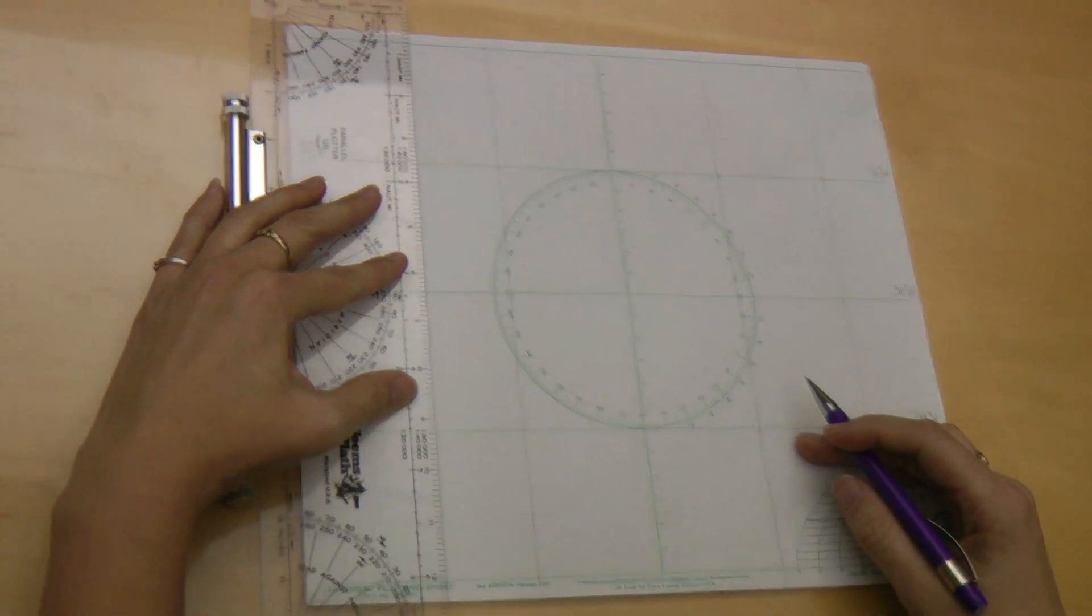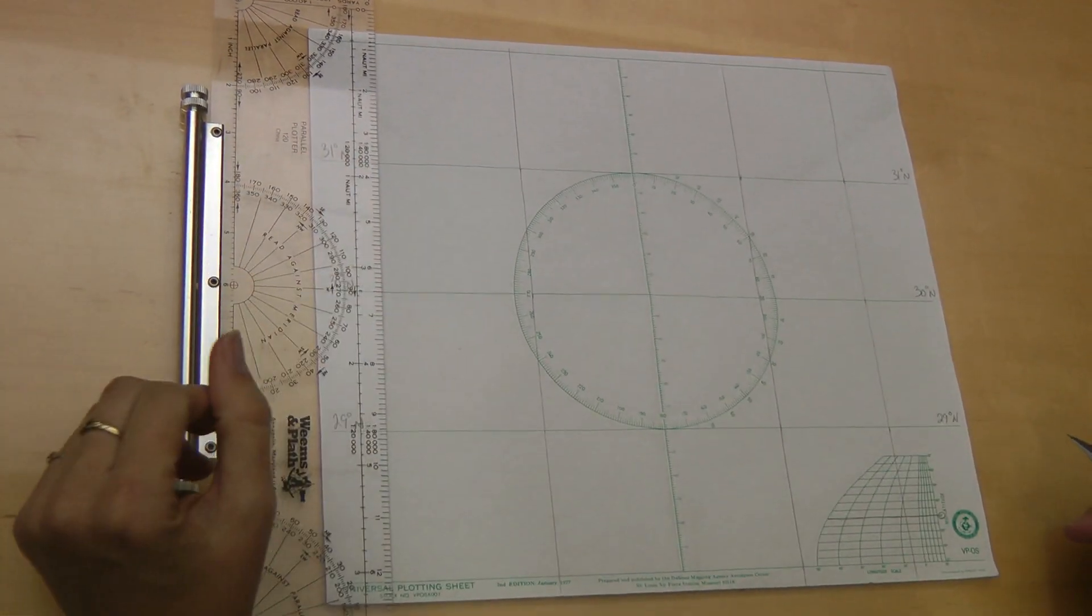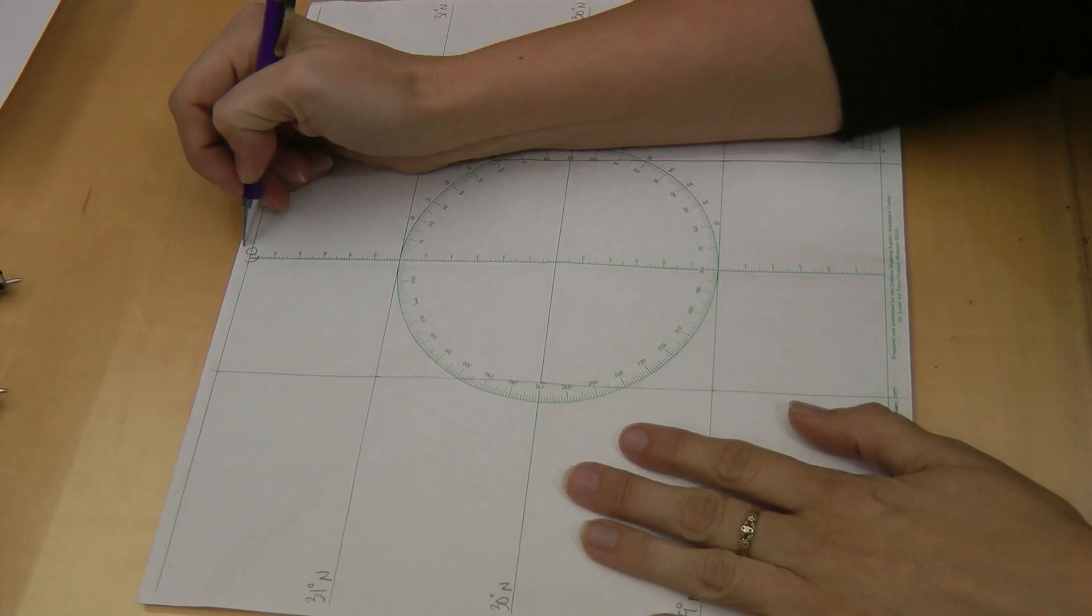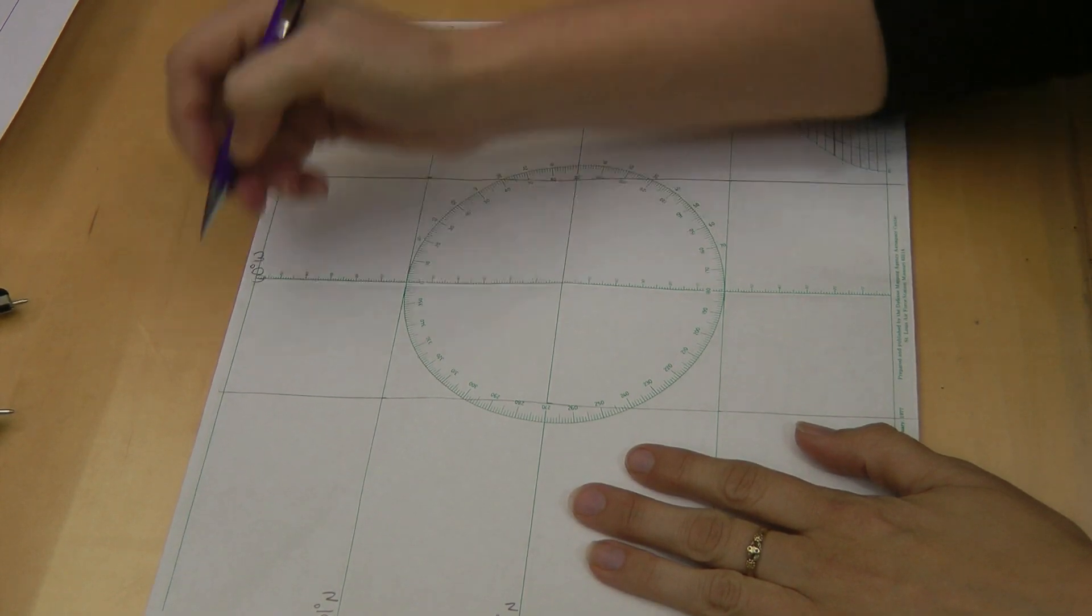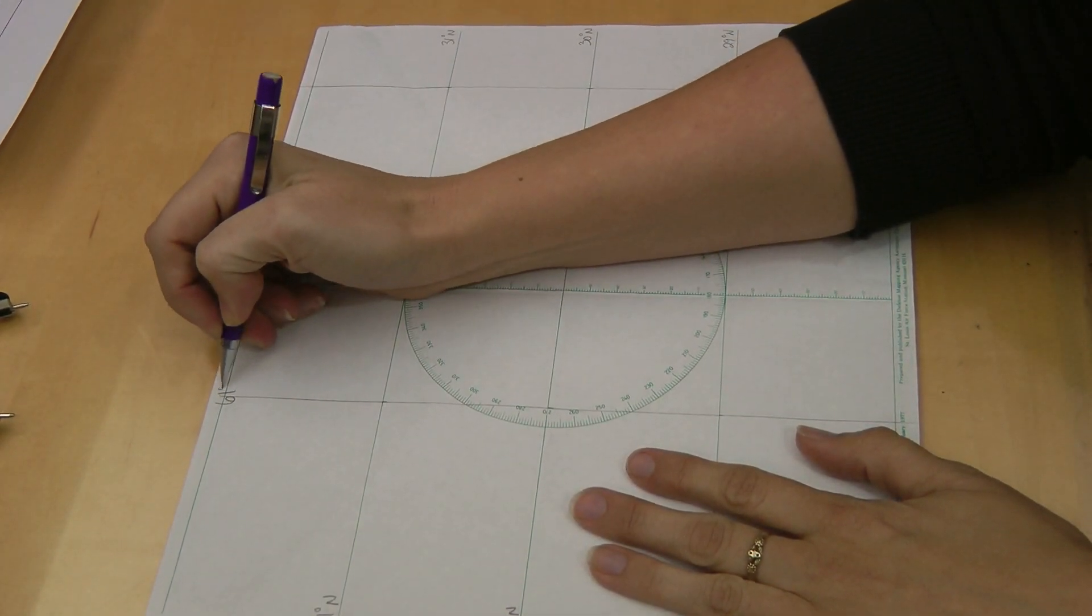Then draw and label your longitude lines. In our example, let's say our nearest longitude is 60 degrees west. As west increases towards the west, or left on the sheet, we label the left one as 61 degrees west and the right one is 59 degrees west.